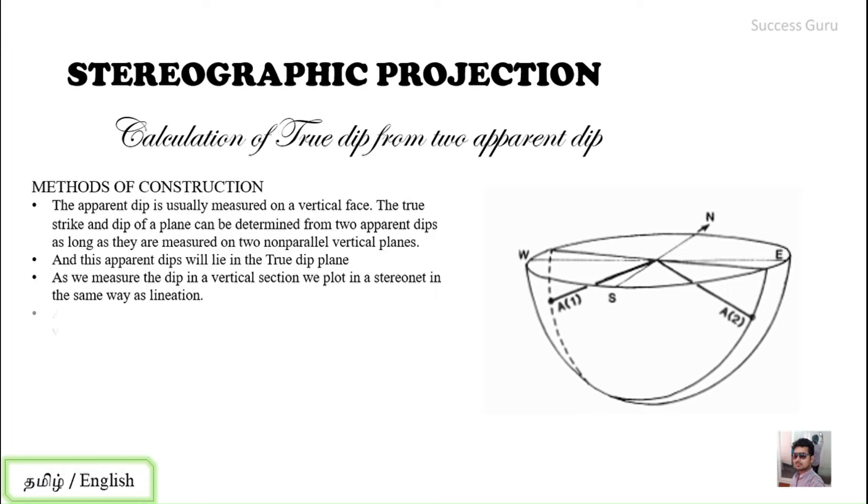As you know, these two lineations will only coincide in one great circle and that will be the true dip plane. This is the basic principle behind this type of solving the question.